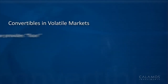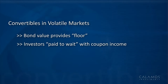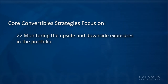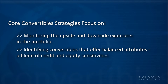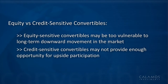In volatile markets, the bond value of a convertible provides a floor, and through coupon income, investors are paid to wait for the markets to turn. They provide downside protection in down markets. In a core convertible strategy, the focus is on monitoring the upside and downside exposure within the portfolio, looking at both individual securities as well as the portfolio as a whole. Active management should focus on identifying convertibles that offer balanced attributes — a blend of credit and equity sensitivities. The most equity-sensitive convertibles may be too vulnerable over the long-term to downside movements, while the most credit-sensitive convertibles may not provide enough opportunity for upside participation.